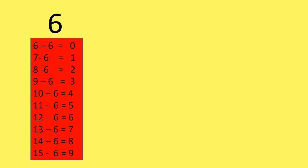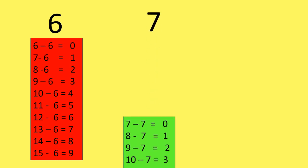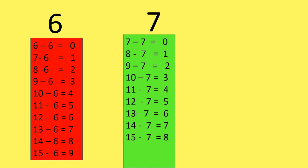Now let's see the Subtraction Table of 7. 7 minus 7 is equal to 0. 8 minus 7 is equal to 1. 9 minus 7 is equal to 2.